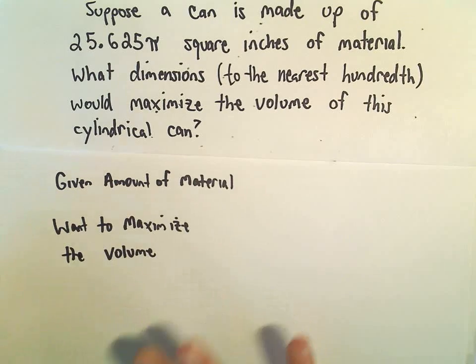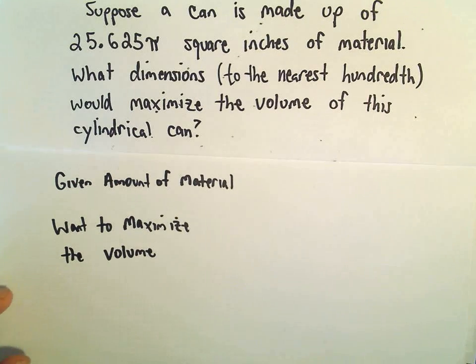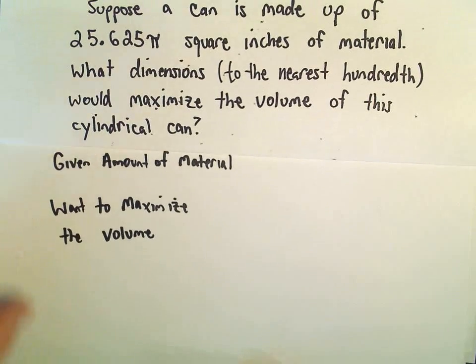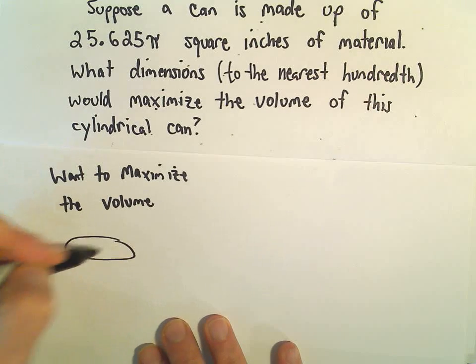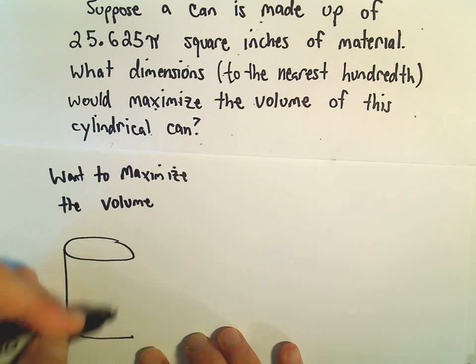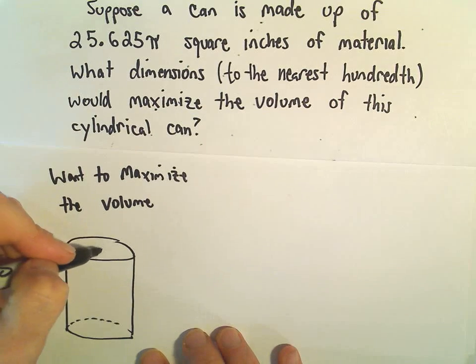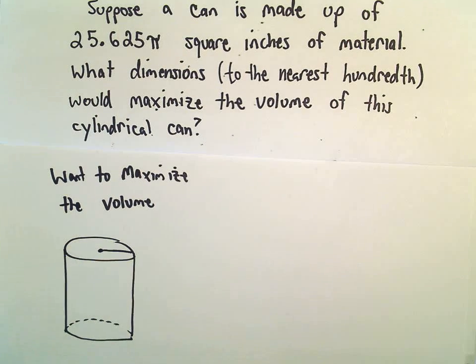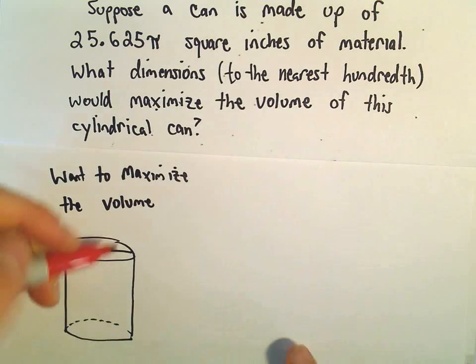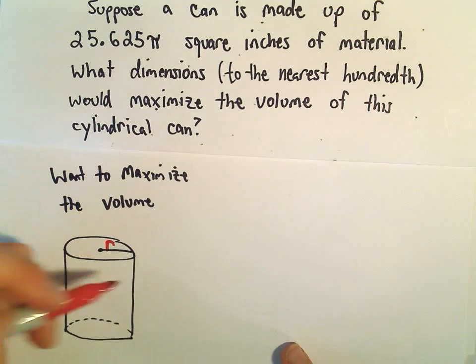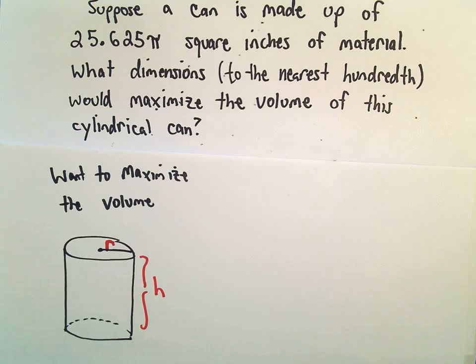So what I'm going to do is just try to create some equations that relate this information. The first thing I'm going to do is draw a little generic can here. Alright, so this can's going to have some radius. We can call it R generically. That's what we're trying to figure out. So there's our radius R and the height H.